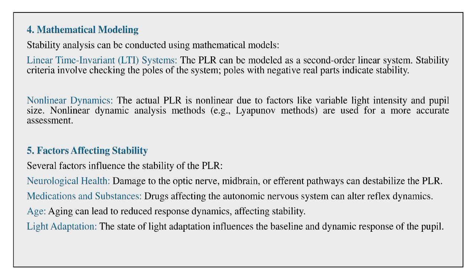Factors affecting stability: Several factors influence the stability of the PLR. Neurological health — damage to the optic nerve, midbrain, or efferent pathways can destabilize the PLR. Medications and substances affecting the autonomic nervous system can alter reflex dynamics. Aging can lead to reduced response dynamics, affecting stability. Light adaptation also influences the baseline and dynamic response of the pupil.